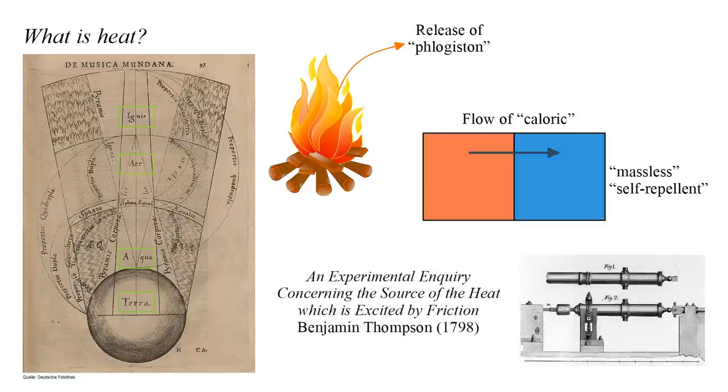A powerful argument against the idea of heat as a substance was presented in 1798 by Benjamin Thompson in his 'An Experimental Inquiry Concerning the Source of the Heat Which is Excited by Friction.' Thompson observed that during the boring of a cannon, a tremendous amount of heat is generated by friction, and there is no limit to this process.